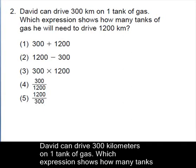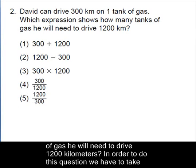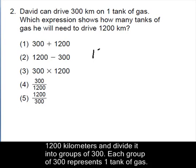David can drive 300 kilometers on one tank of gas. Which expression shows how many tanks of gas he will need to drive 1,200 kilometers? In order to do this question, we'd have to take 1,200 kilometers and divide it into groups of 300. Each group of 300 represents one tank of gas.